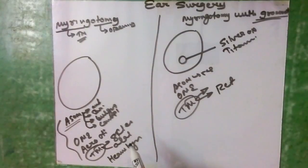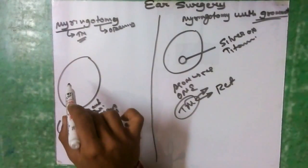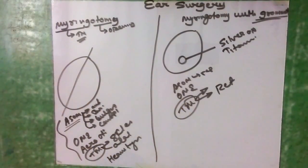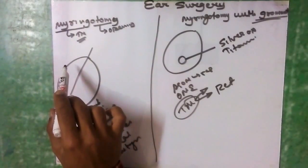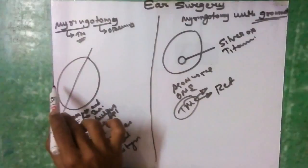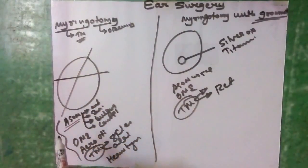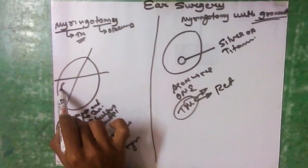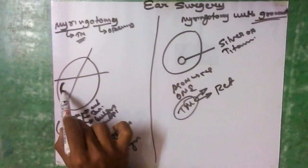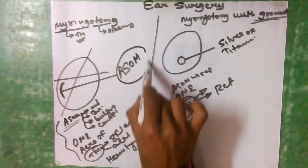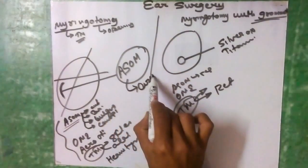Now coming to the incision site: we divide the tympanic membrane into four quadrants — anterosuperior, anteroinferior, posterosuperior, and posteroinferior. If the infection is ASOM, the incision is usually a circumlinear type incision placed in the posterosuperior part.